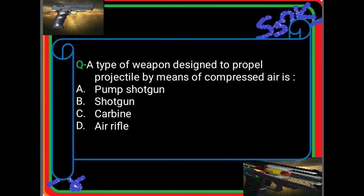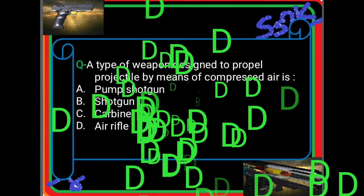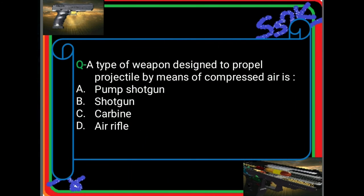Next question: a type of weapon designed to propel a projectile by means of compressed air is called — Letter A: pump shotgun, B: shotgun, C: carbine, D: air rifle. The answer is Delta — air rifle, also known as air gun.